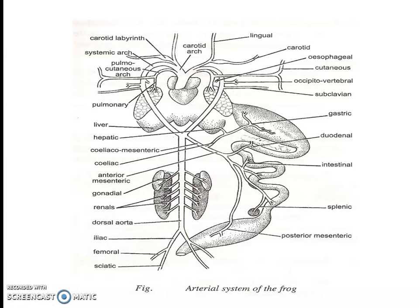The iliac and pelvic arteries continue to the hind limb of their side as the sciatic artery. The celiaco-mesenteric artery supplies the alimentary canal, liver, pancreas, and spleen.